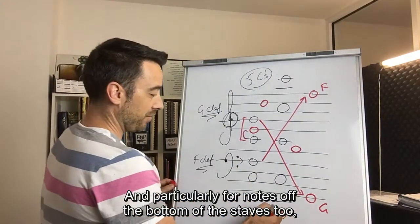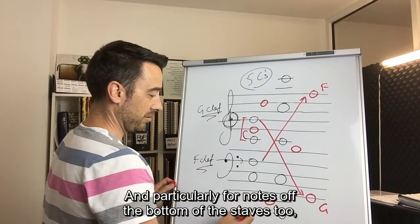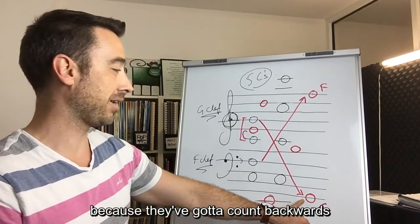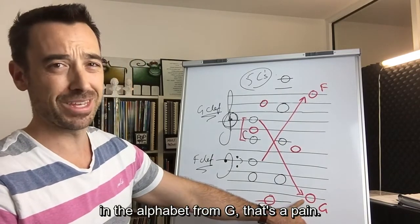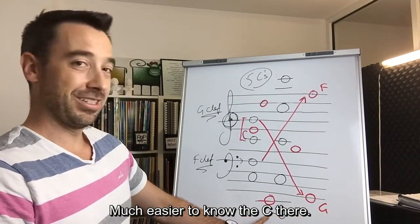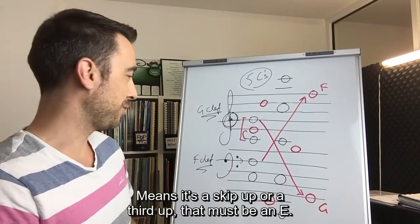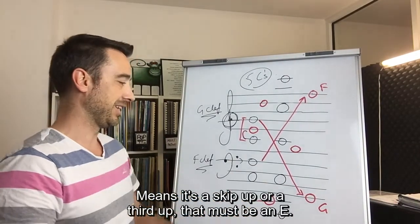You get the idea, right? And particularly for notes off the bottom of the stave too. You know, this can be a painful note for students to work out, right? Because they've got to count backwards in the alphabet from G. That's a pain. Much easier to know the C there. And oh, it's just the next line up. It means it's a skip up or a third up. That must be an E.